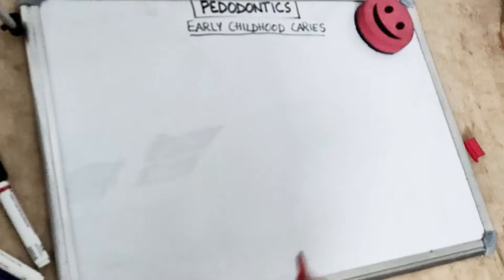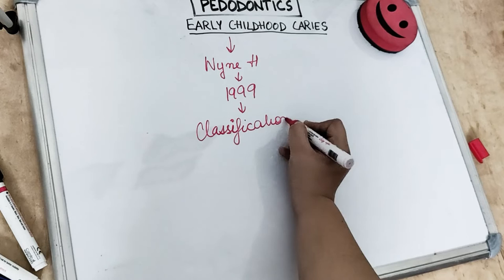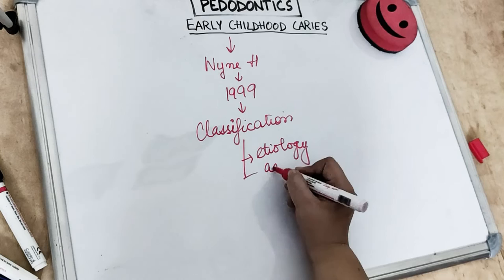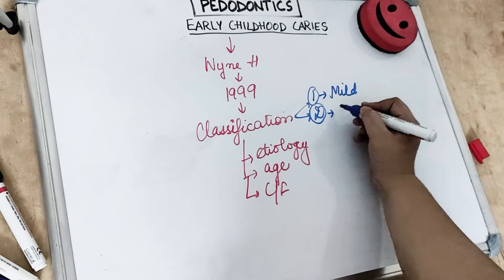The classification of early childhood caries was given by VNH in 1999. This classification involves the common probable etiology, the range of age affected, and the clinical features of the particular lesion. It is classified into mild, moderate, and severe lesions.